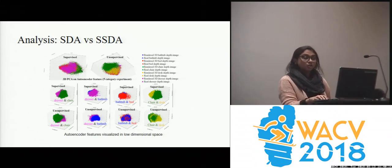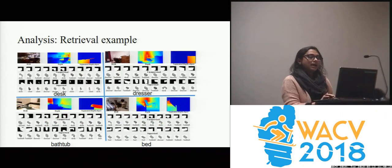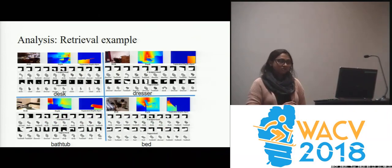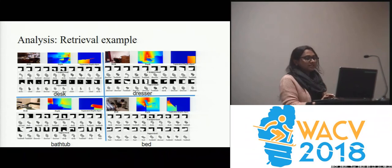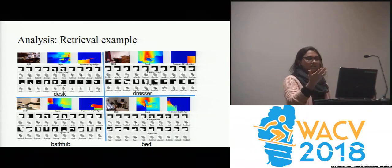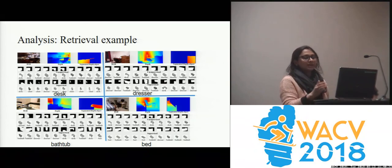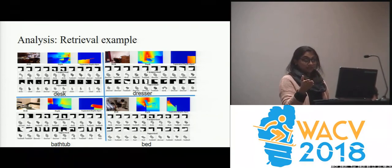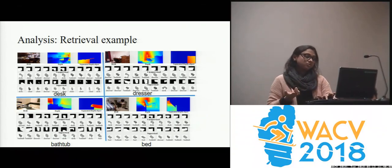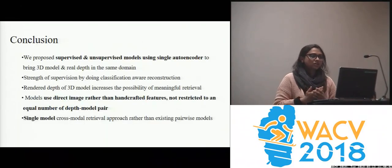Overall, supervised is doing the best. Here we show some retrieval examples for desk, bathtub, bed, and dresser. One row shows what the model retrieved, and the corresponding row shows the corresponding 3D models. For bathtub, bed, and dresser, supervised is doing best, but for desk, unsupervised is actually doing better.